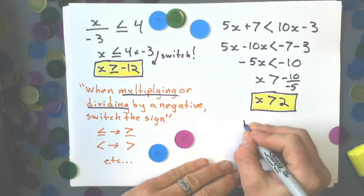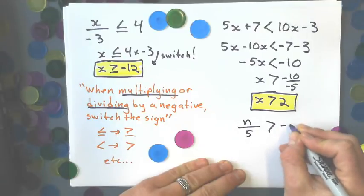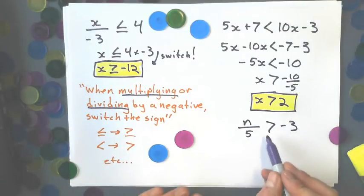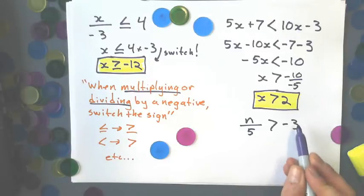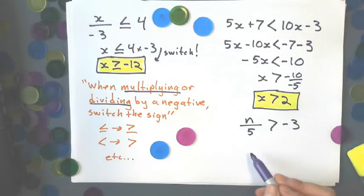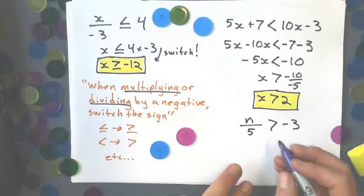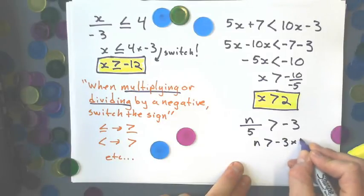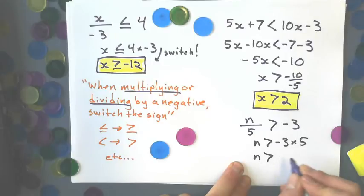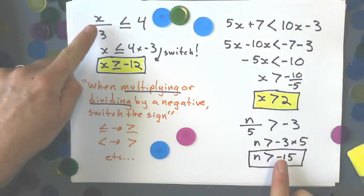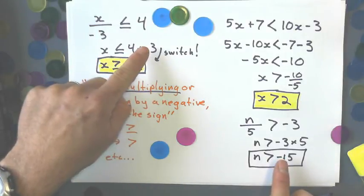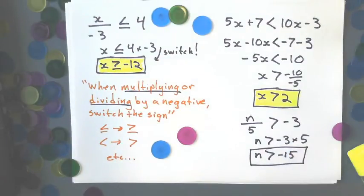And just a note real quick. It doesn't mean that, for example, this comes up a lot. If I have n/5 > -3, your sign's not going to change direction here just because you see a negative. Because to solve this, you're multiplying by a 5 to solve. You're not multiplying by a -5, just a positive 5. So this doesn't change direction here. And it's all numbers greater than -15. So that's the difference between something like this and here. Okay, I'm multiplying by a -3 so it switches. Here, I'm multiplying by a positive 5, it doesn't change.